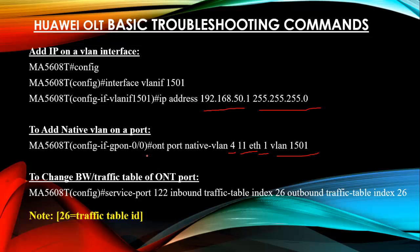To change bandwidth or traffic table on a service port, use 'service-port 122 inbound traffic-table index 26 outbound traffic-table index 26'. For example, if you have a 5 Mbps bandwidth configured on an ONT and want to upgrade to 10 Mbps, create a new 10 Mbps traffic table and assign it to the service port using this command.